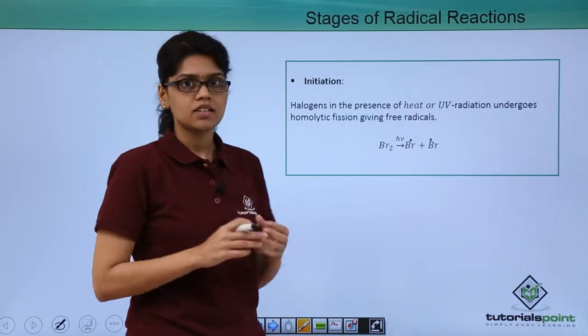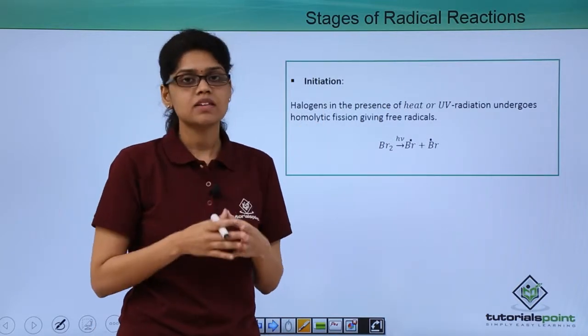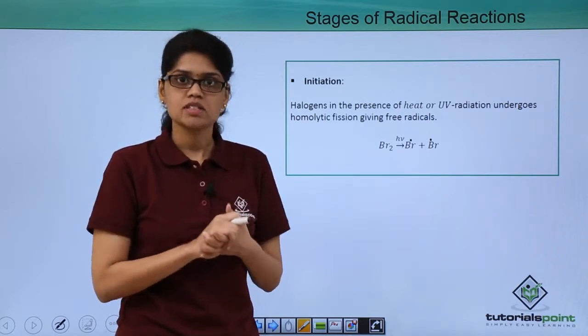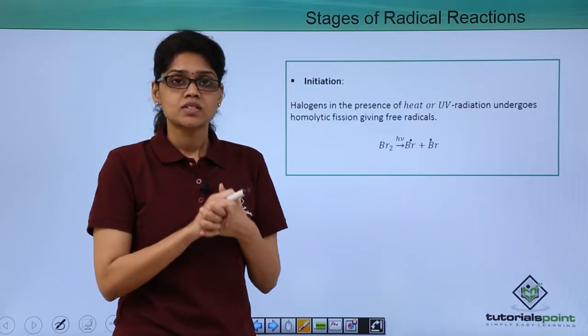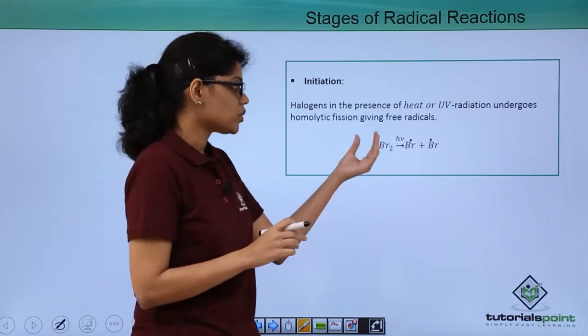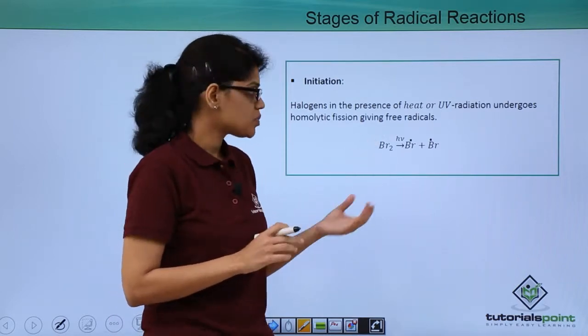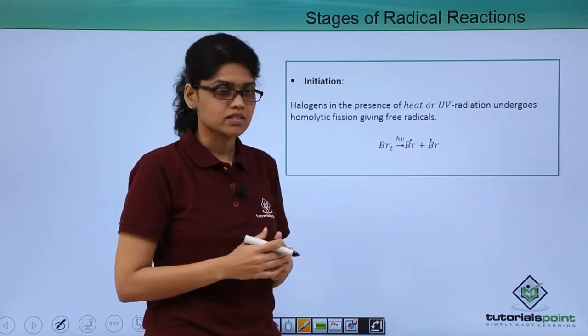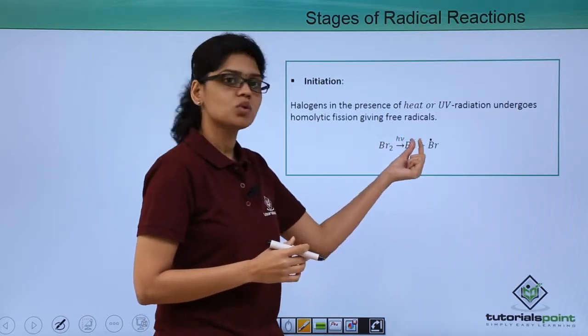In initiation, the molecule in the presence of heat or light undergoes homolytic cleavage giving us free radicals. In our example we have taken bromine molecule, and when it is exposed to light or heat, it gives us bromine radicals. As you can see here, Br2 gives us two Br dot.